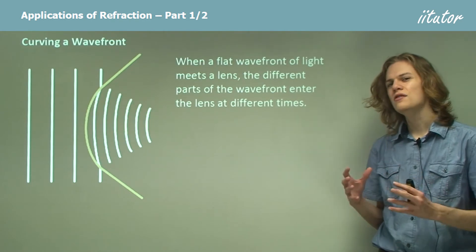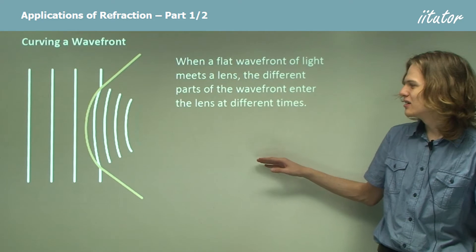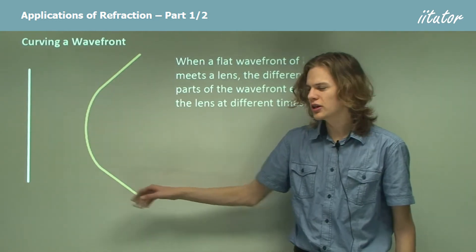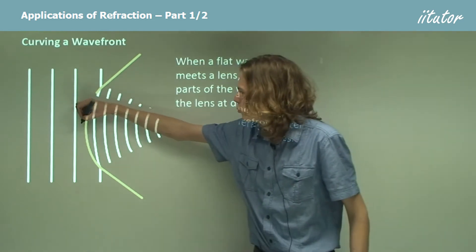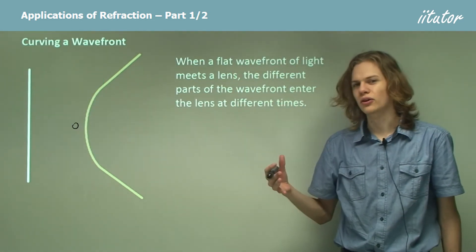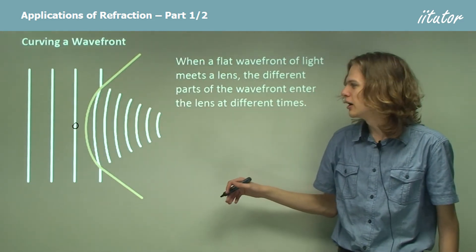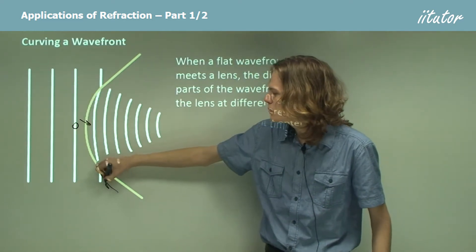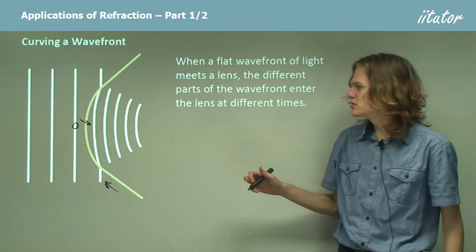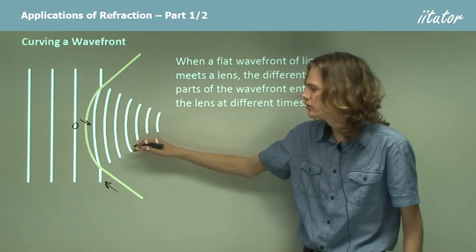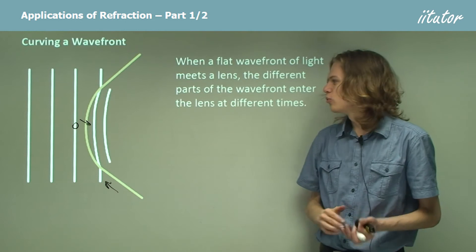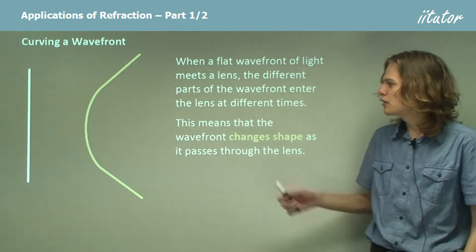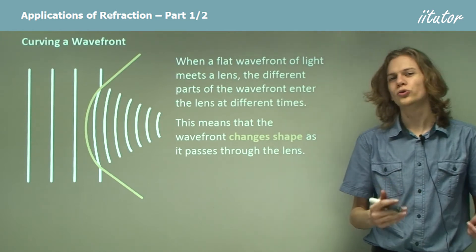So how do concave and convex lenses differ from mirrors? If we look at how a wave acts when it meets a lens, we can see that the shape of the wavefront will change as it goes into the lens. When we have flat wavefronts, the middle of the wavefront will reach the lens sooner than the edge of the wavefront, assuming we have a convex lens. This means that the middle part of the wave is slowed down while the end parts are still moving at the same speed, so the entire wavefront starts to bend inward and become curved instead of flat. This means all the waves end up focusing at a particular point as they pass through the curved boundary between two media.